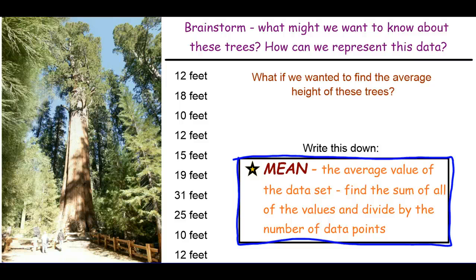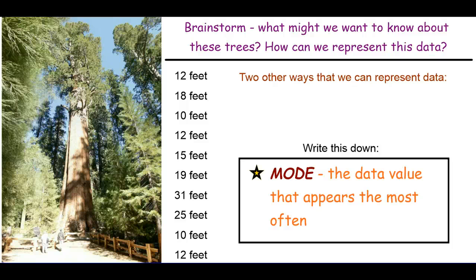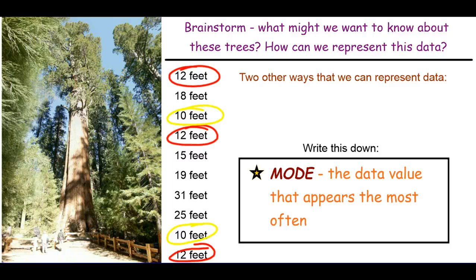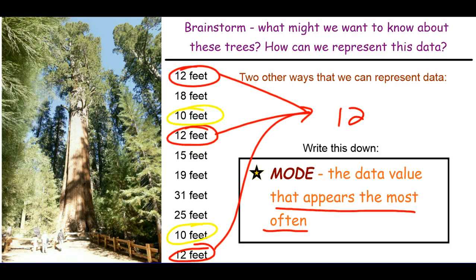There are two other types of measures we can find, other than range and mean. We might be interested in what height of tree appears most often — the most common height. Looking at the data, we find a 12-foot tree three times, which is the most, and a 10-foot tree twice. The other heights appear only once. So the mode — the data value that appears most often — is 12 feet. Go ahead and pause the video and write down the definition of mode.